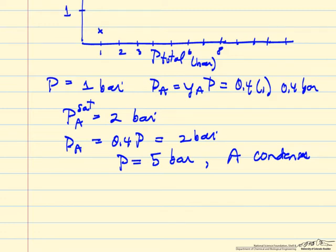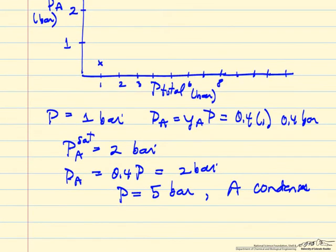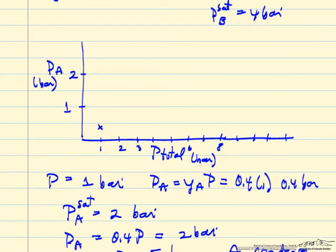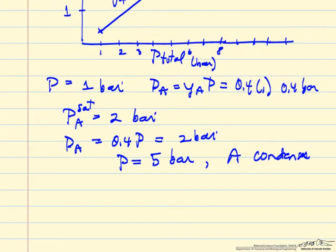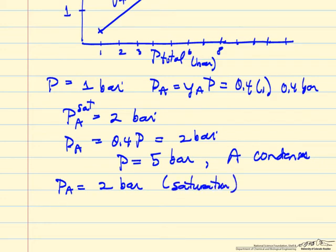Because A and B are immiscible, they exist as completely separate liquid phases, so each exerts its own saturation pressure independently. We have pure A in the liquid phase and pure B in the liquid phase. So condensation begins at a total pressure of 5 bar. The partial pressure of A stays at 2 bar once liquid A is present, because we're at saturation conditions.